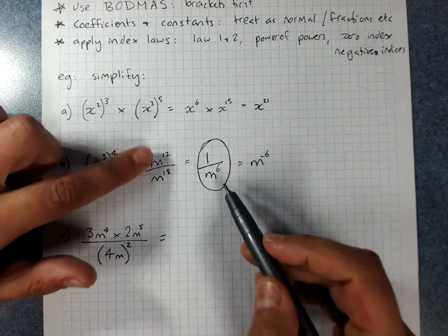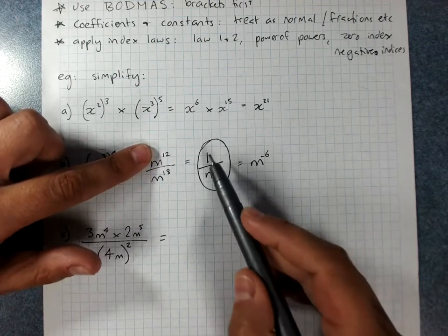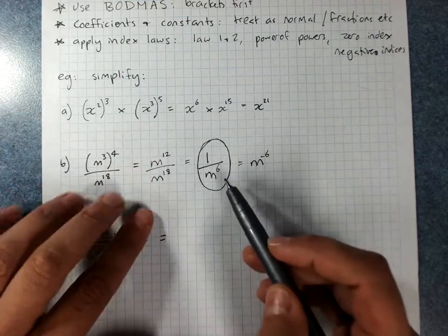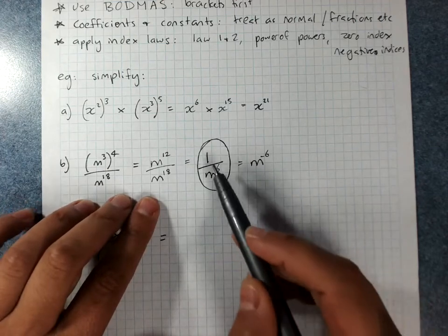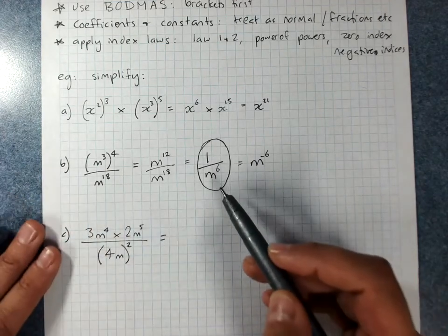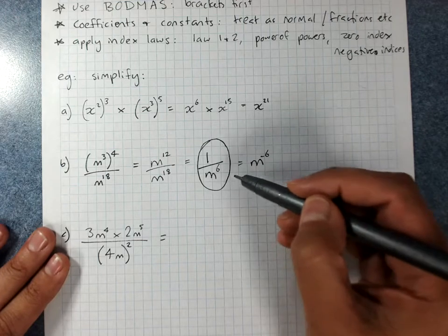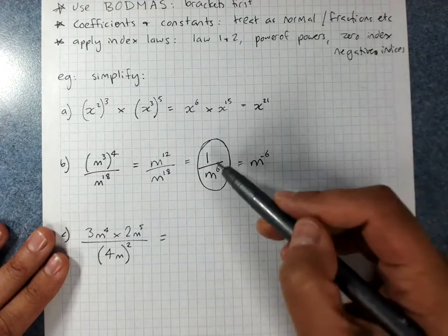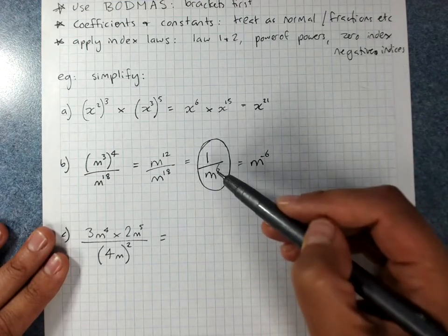Any time you're simplifying a fraction and there's nothing left on top, there would be a 1. Check in with me if you just watched this and don't understand how we got to this, because that's important. This is the better answer. We don't normally want negative indices. We want to give answers with positive powers.